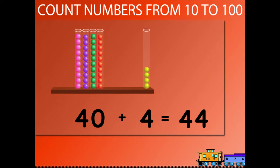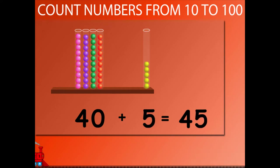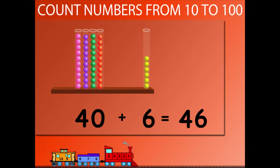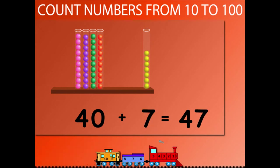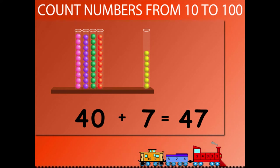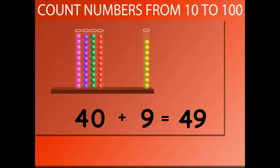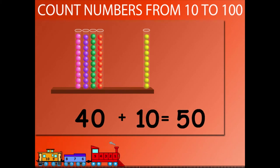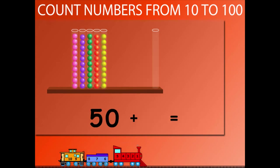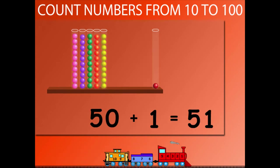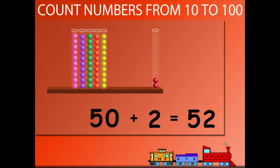40 plus 4 is equal to 44. 40 plus 5 is equal to 45. 40 plus 6 is equal to 46. 40 plus 7 is equal to 47. 40 plus 8 is equal to 48. 40 plus 9 is equal to 49. 40 plus 10 is equal to 50.